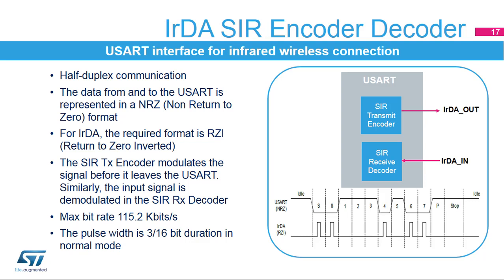The USART supports IrDA specifications, which is a half-duplex communication protocol. The data from and to the USART is represented in an NRZ, or non-return-to-zero, format, where the signal value is at the same level through the entire bit period. For IrDA, the required format is RZI, return-to-zero inverted, where a 1 is signaled by holding the line low, and a 0 is signaled by a short high pulse. The SIR transmit encoder modulates the NRZ transmit bitstream output from the USART. The SIR receive decoder demodulates the return-to-zero bitstream from the infrared detector and outputs the received NRZ serial bitstream to the USART.